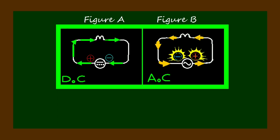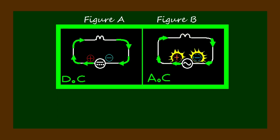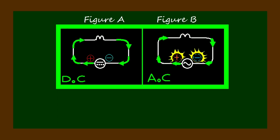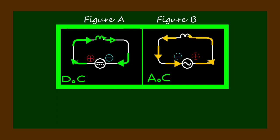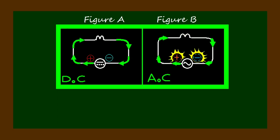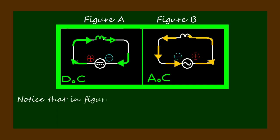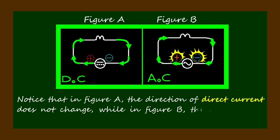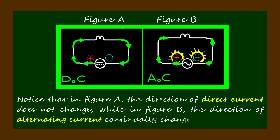This diagram shows how the electric current is moving as direct current and as alternating current. In Figure A, we can observe how the current moves as direct current. In Figure B, we can observe how the current moves as alternating current. Notice that in Figure A, the direction of direct current does not change, while in Figure B, the direction of alternating current continually changes.